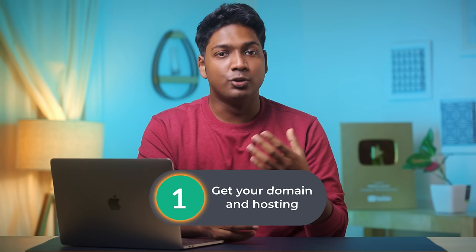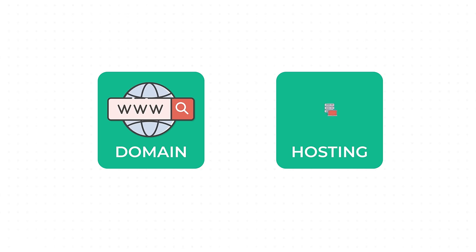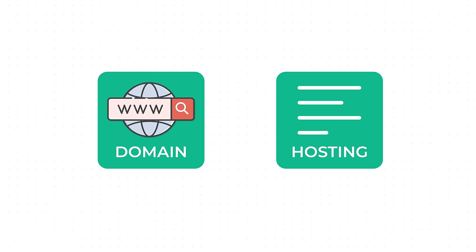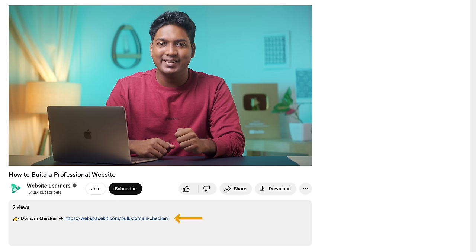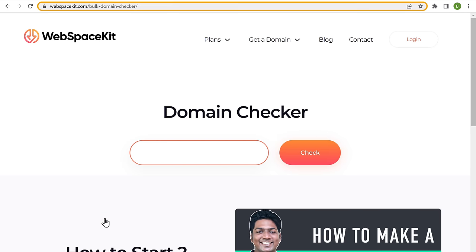To create our website, we are going to do 5 steps. The first step is to get your domain and hosting. A domain is the name of your website and hosting is the place where all your website's files are stored — it can be your images, videos and also the content. To get our domain and hosting, click the link below this video and it'll take you to Webspace Kit.